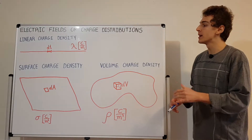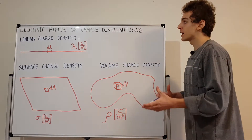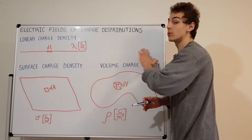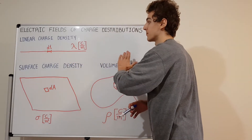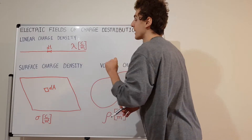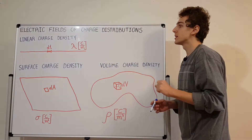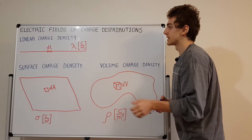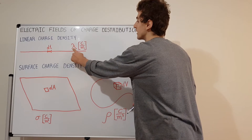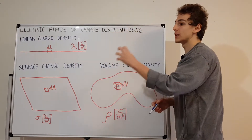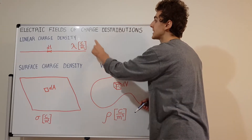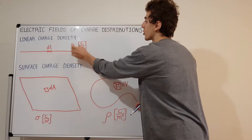Let's have a look at some common charge distributions. A lot of the time you're going to see a line of charge, like a wire that's charged but there's no flow — remember this is electrostatics, there's no flow of current, there are just charges arranged in a line. For these situations you're going to want to use the quantity of linear charge density, represented by the Greek letter lambda. The units are charge per unit length: coulombs per meter in SI units.